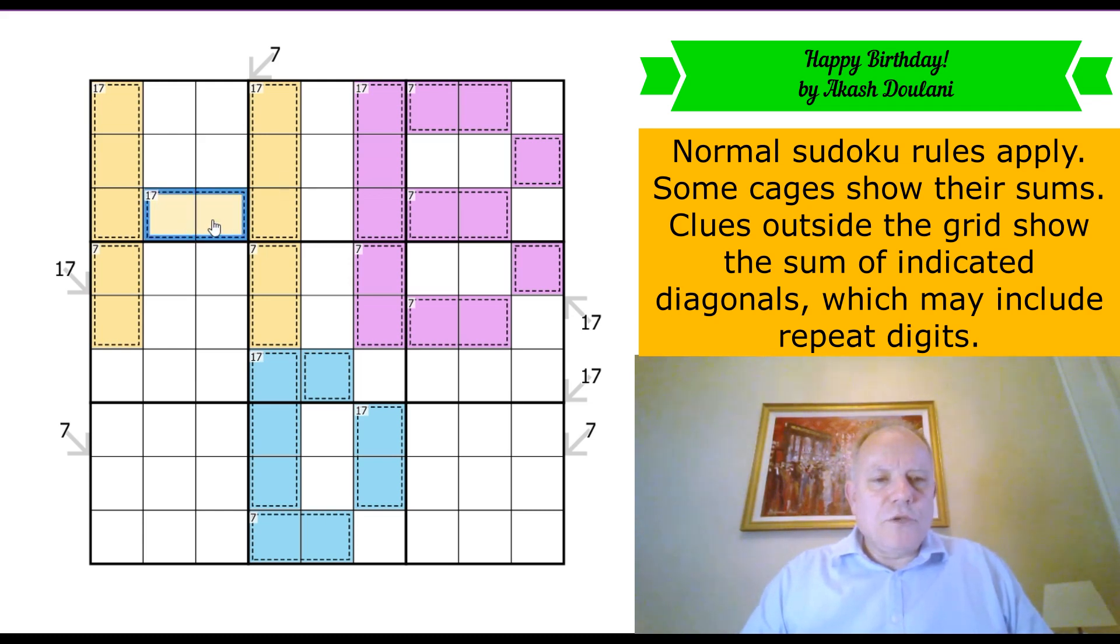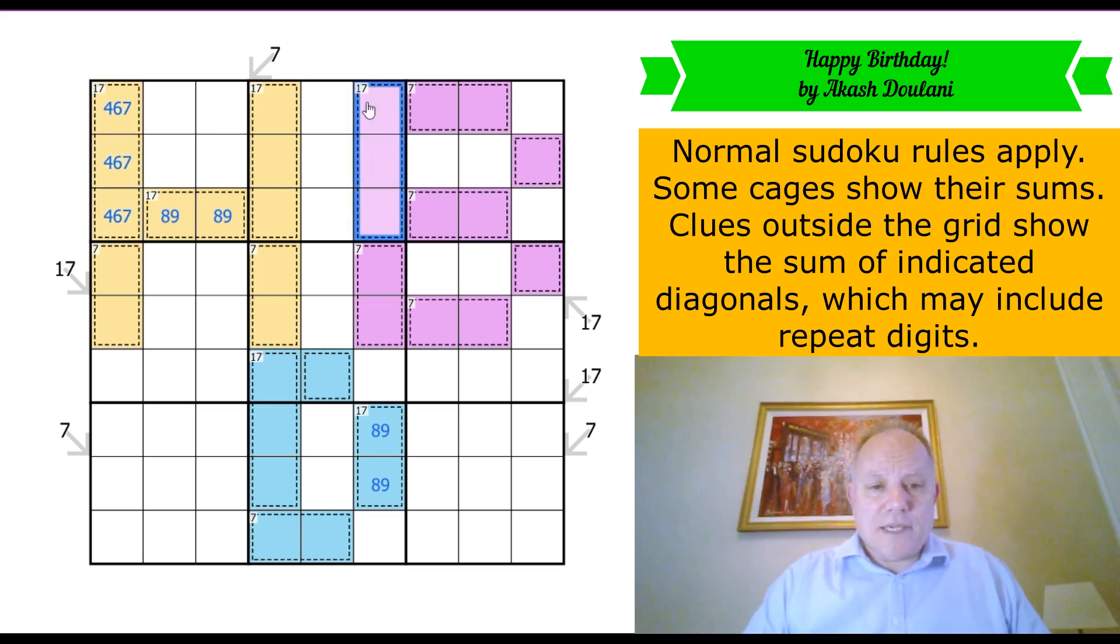And we've got some 2-cell 17 cages, which are always known candidates: 9 and 8. And we've got this 17 cage is in the same box as the 9 and 8. And one thing I remember from that incredibly memorable Japanese sums puzzle I did, where the only clues were 17s, is that once 9 and 8 are impossible, and it applies in column 6 as well, a 3-digit 17 is 7-6-4.